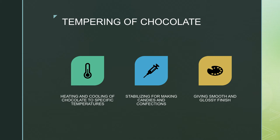Tempering can be defined as a process in which the cocoa butter in chocolate is hardened into a specific crystalline pattern. When the cocoa butter molecules are in this pattern, the chocolate is shiny and breaks with a sharp snap. Tempering chocolate is both an art and a science — a science because tempering is temperature dependent. If the temperature of the melted chocolate is too high, the chocolate will burn; if too low, it might never harden properly.